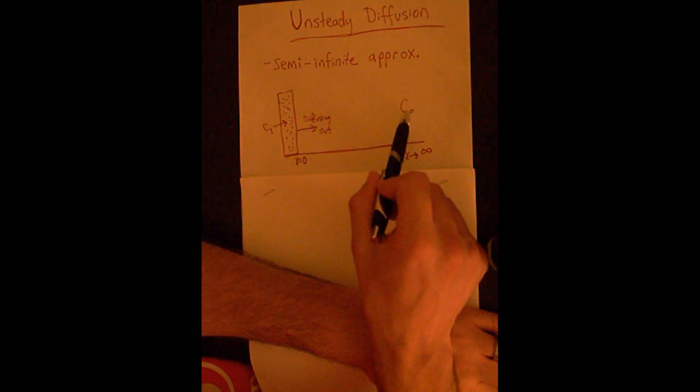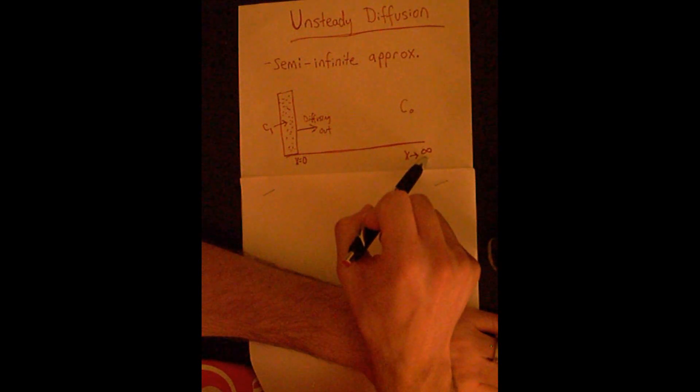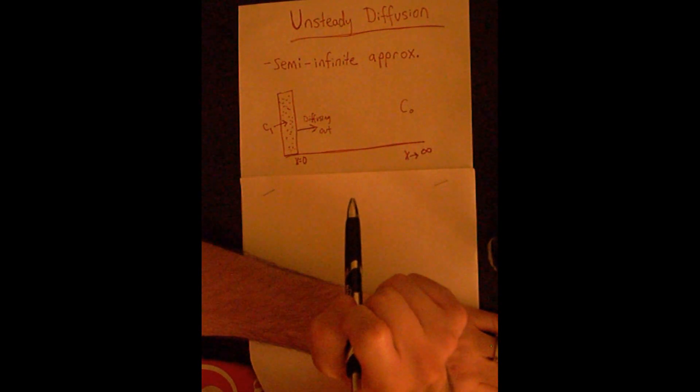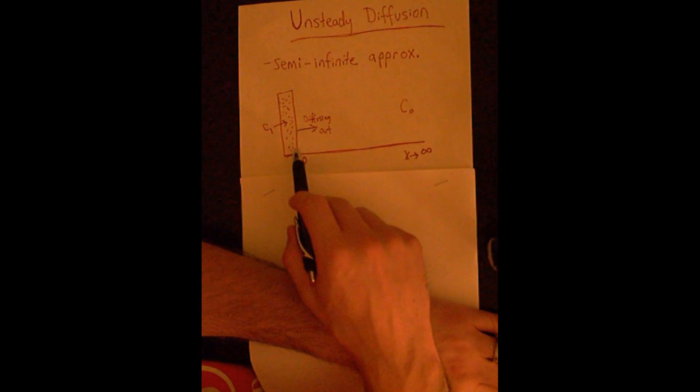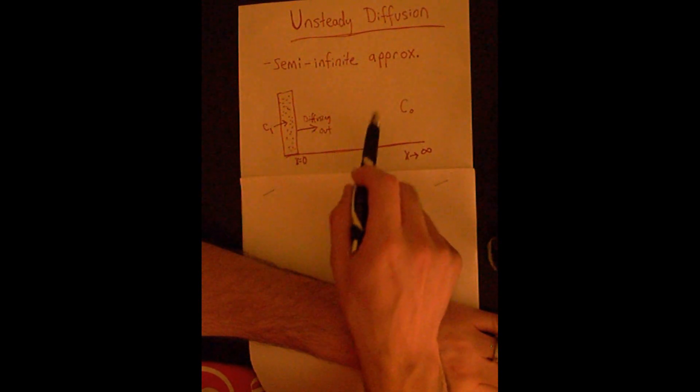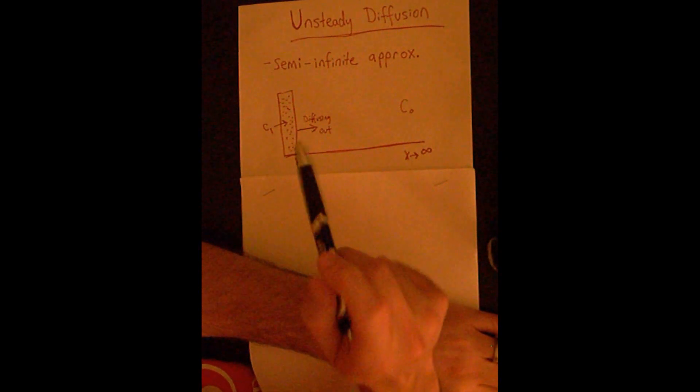Initially, this area here has a concentration of C0. At all times, as x approaches infinity, the concentration has to remain at C0. At the surface of the interface between this bulk area and where our solute is present, we'll start the coordinate system there with x equals zero.